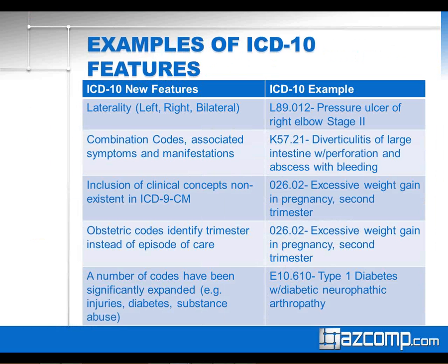Some examples of new features available under ICD-10 that we did not have under ICD-9: one would be laterality — in the code itself, we can now indicate left, right, or bilateral in many cases. There's also a new type called a combination code — what used to be two different ICD-9 codes can now be reported under one single ICD-10 code, because we're associating symptoms with their actual manifestations. There's inclusion of new concepts not existent in ICD-9. Under obstetrics codes, we're now able to identify the trimester instead of just the episode of care. A number of codes have also been significantly expanded — examples include injuries, diabetes, and substance abuse.